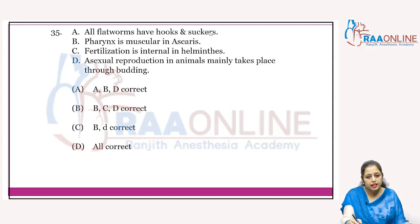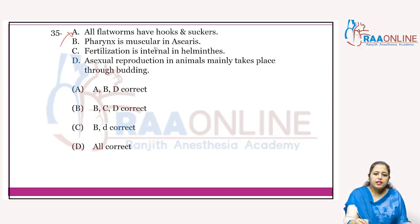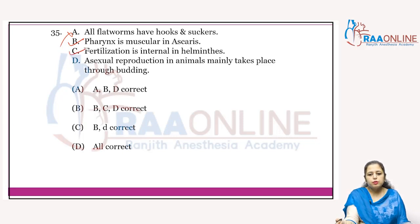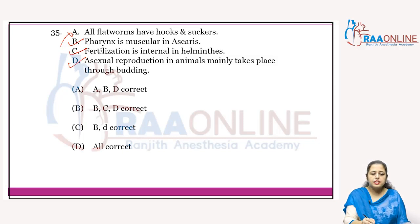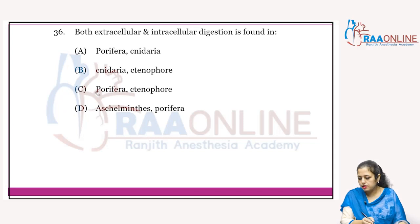Do all flatworms have hooks and suckers? No — that is wrong. Pharynx is muscular in Ascaris — correct. Fertilization is internal in helminths — correct. Asexual reproduction in animals mainly takes place through budding — correct, as in Hydra. Statements B, C, and D are correct, A is incorrect — answer is B.